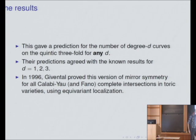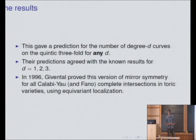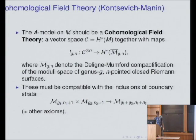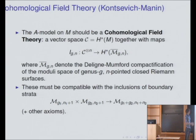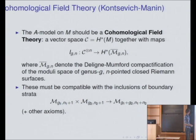I'm using loose language and saying 'number of degree D curves' — I should really be saying a Gromov-Witten invariant, not a curve count. Now I'm going to talk about what exactly is the structure of the A model, the Gromov-Witten invariants. In what sense is this thing equivalent to the B model? Equivalent as what structure?